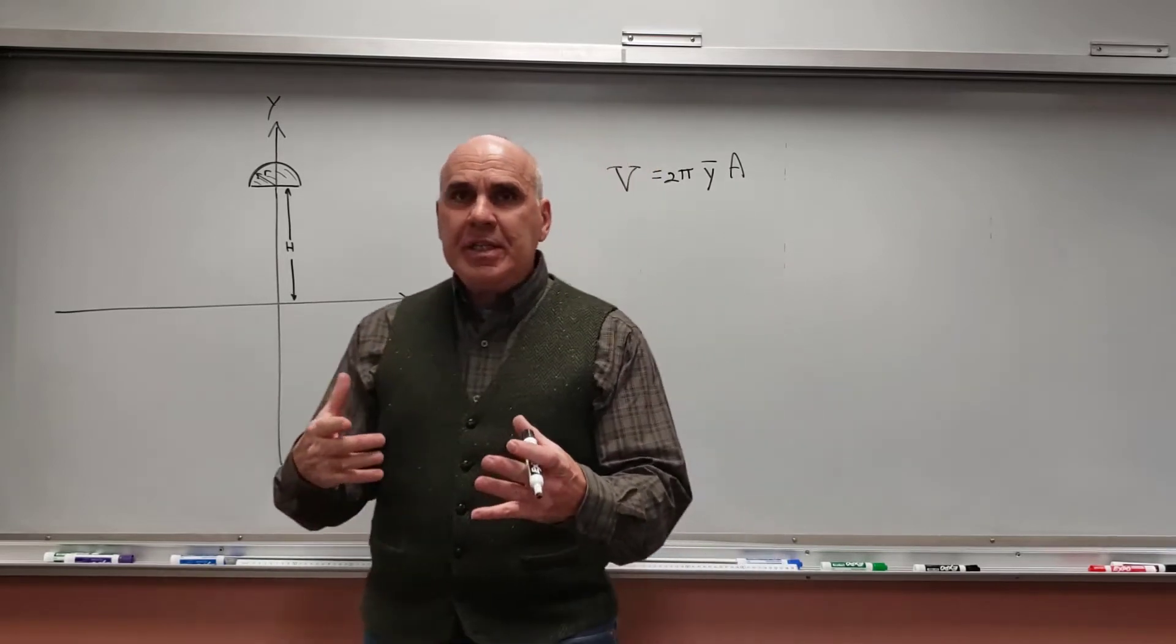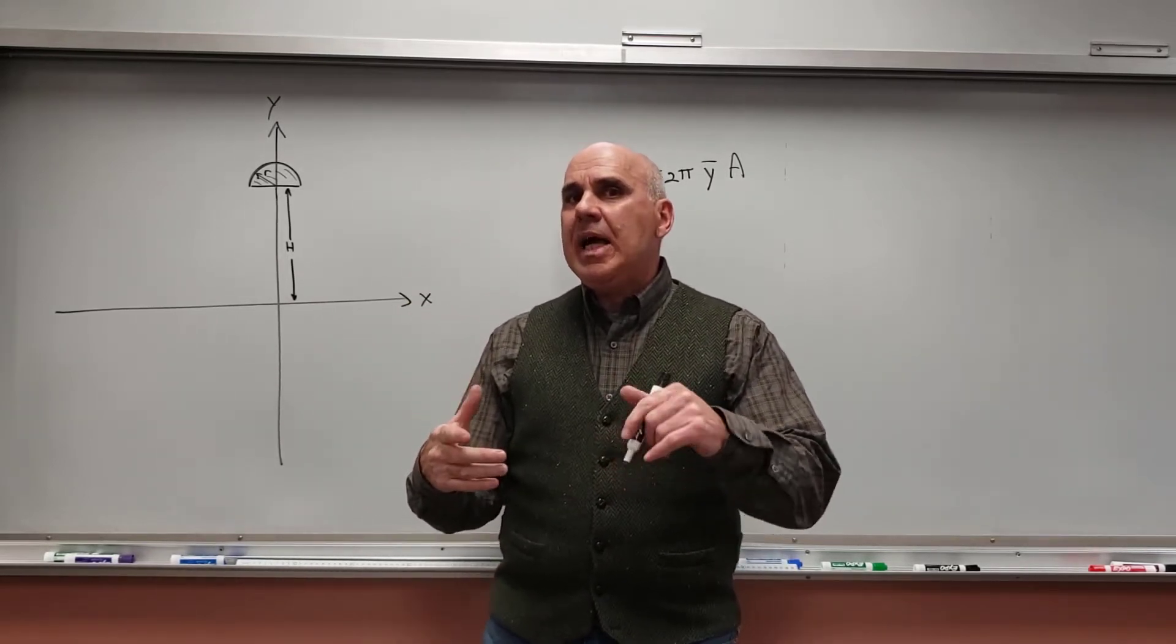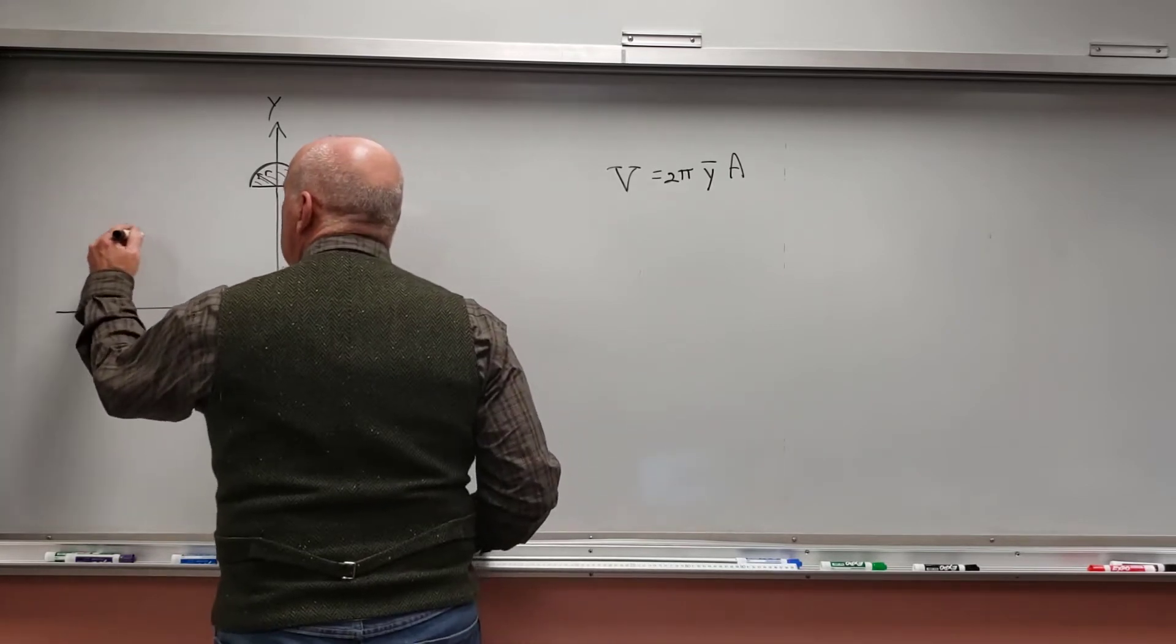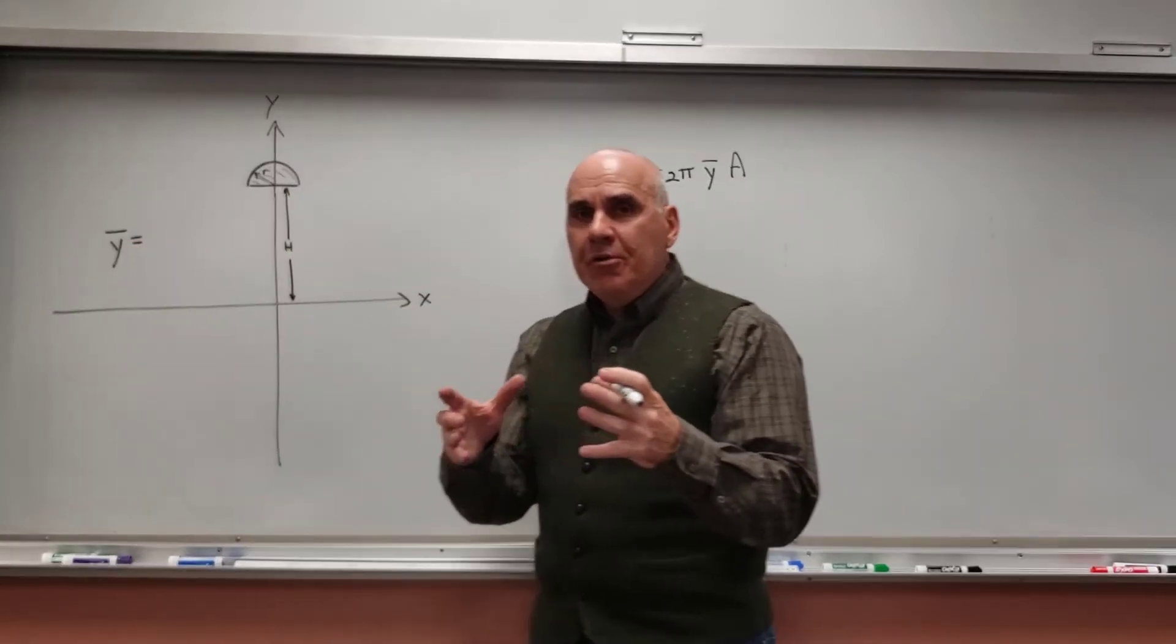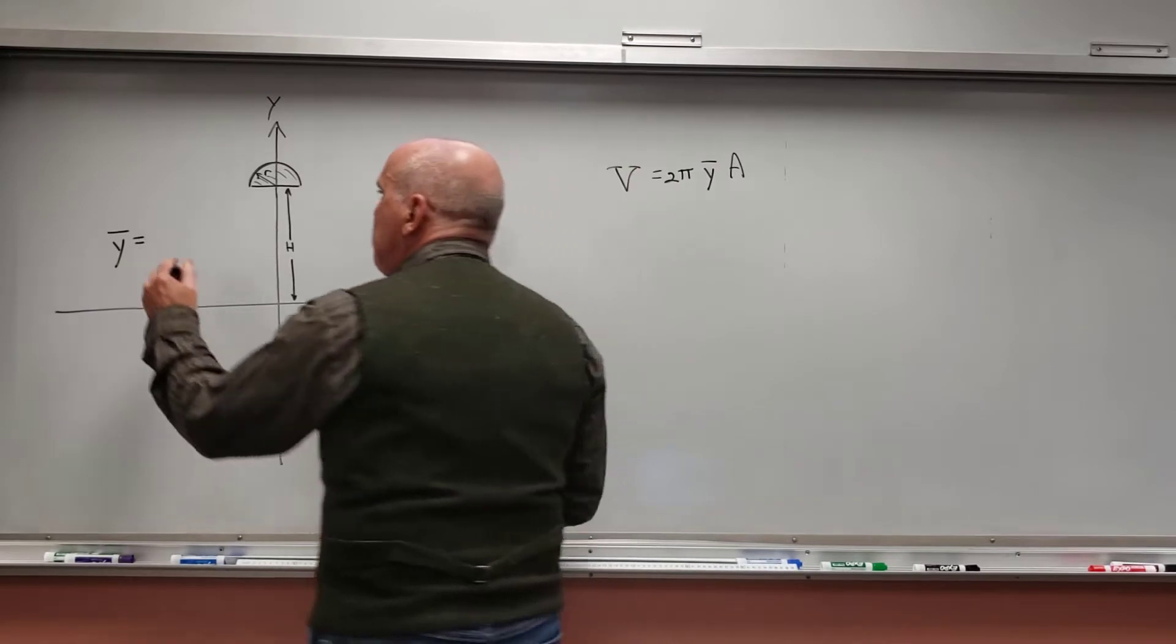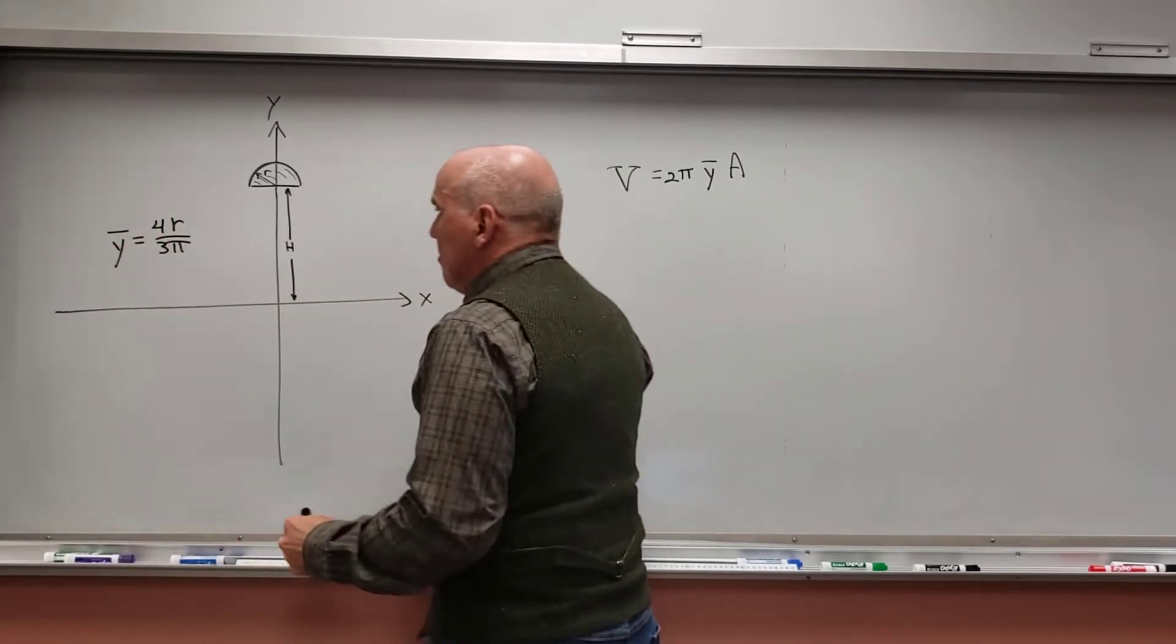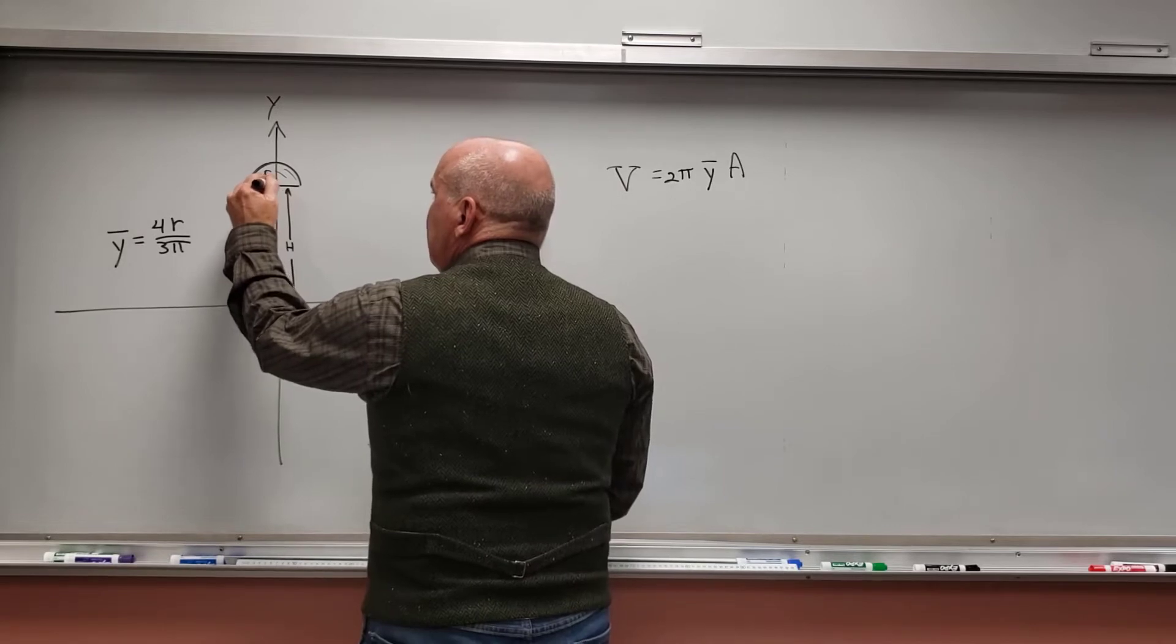Now, if I look in the textbook, I'm going to find that y-bar for a semicircle is equal to 4 times the radius over 3π. But that's assuming that this is the origin, right?